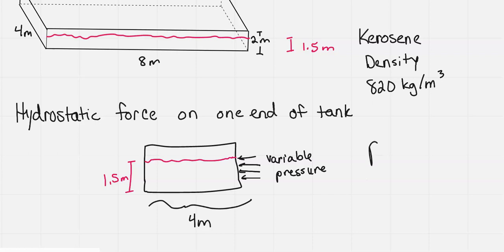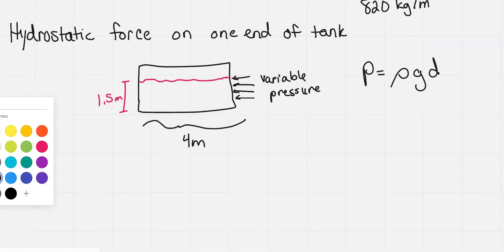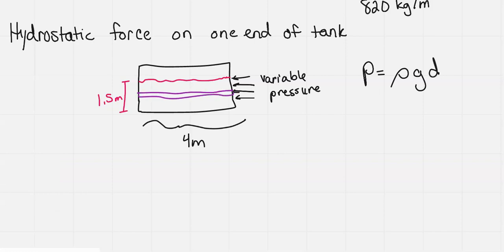So the pressure we had for our equation was ρ times g times d, where ρ is the density, which would be the kerosene, g is gravity, and depth is how far down we are. That pressure will change based on the depth. So we're going to keep changing depths. Let's just pull some random rectangular slice on my sketch of the side end of the tank here. That slice there is going to be the force that I look at. The area of that is what I'm interested in.